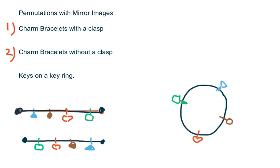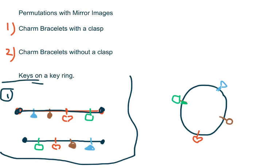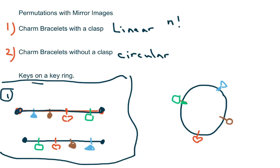We're going to talk about permutations that have mirror images. With a charm bracelet, when it says 'with the clasp,' that means it can be opened, so it's linear — that's n factorial. Without a clasp means you can't open it, so that's circular — that's (n minus 1) factorial. We already talked about the differences between linear and circular permutations.